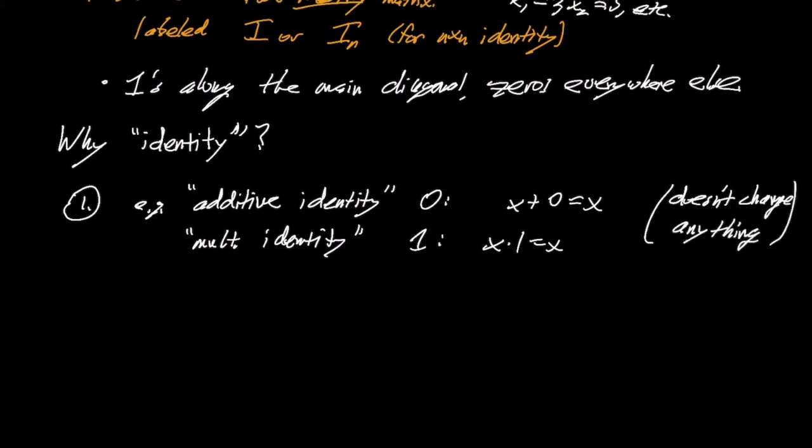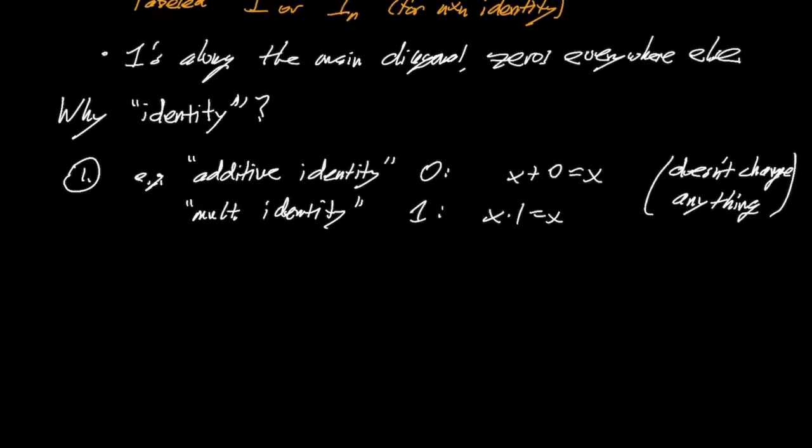And if you think about it, this matrix, let me just do an example. The identity matrix is also a multiplicative identity because consider, you know, the 3 by 3 identity, and let me multiply it by a general three-entry vector, three-dimensional vector.